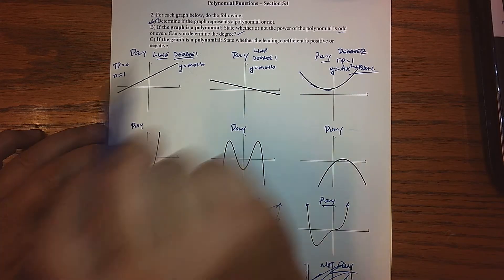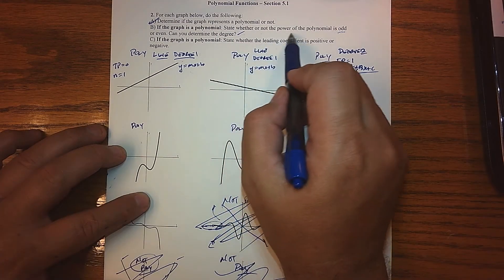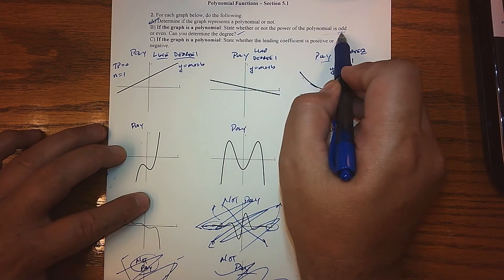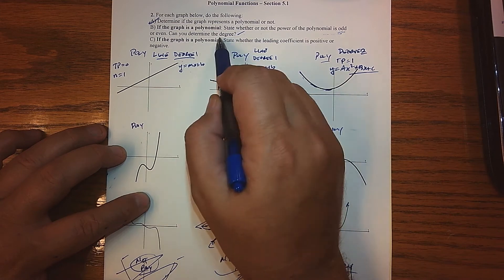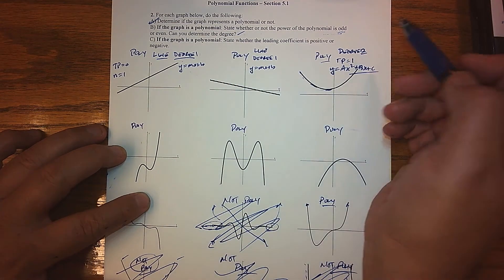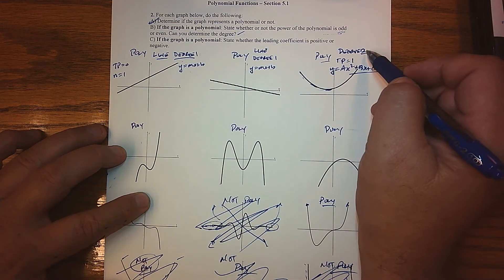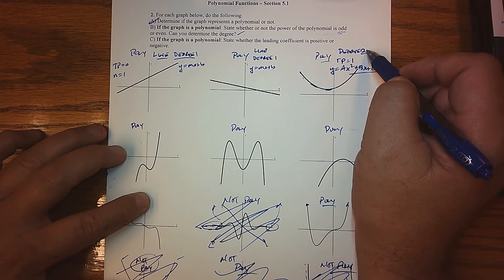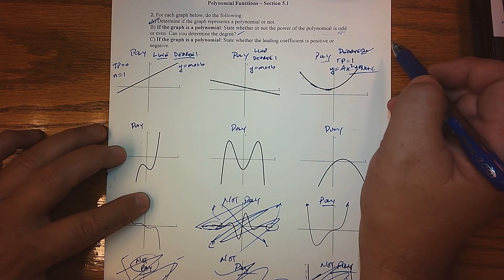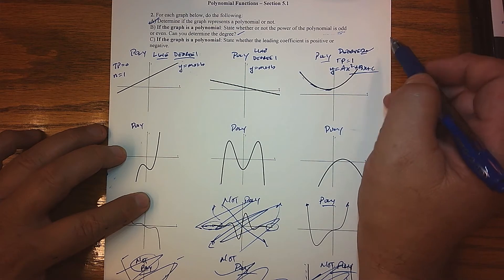So whether or not the power of the polynomial is odd or even, and can you determine the degree? We've got it. So we did both — it's obviously an even degree, and it's two.